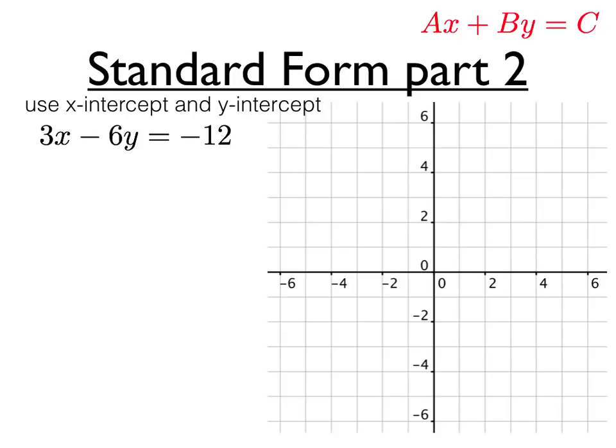The other method for using standard form to draw the equation of the line is to find the x-intercept and the y-intercept. The x-intercept is a point on the line that crosses the x-axis. That point will have a y-coordinate of 0.